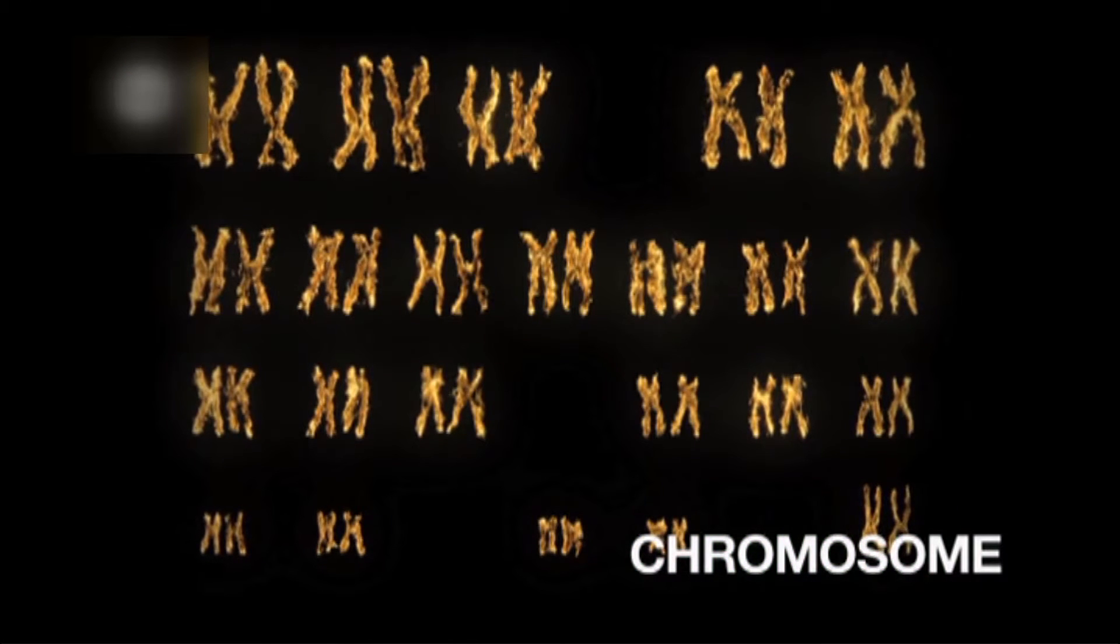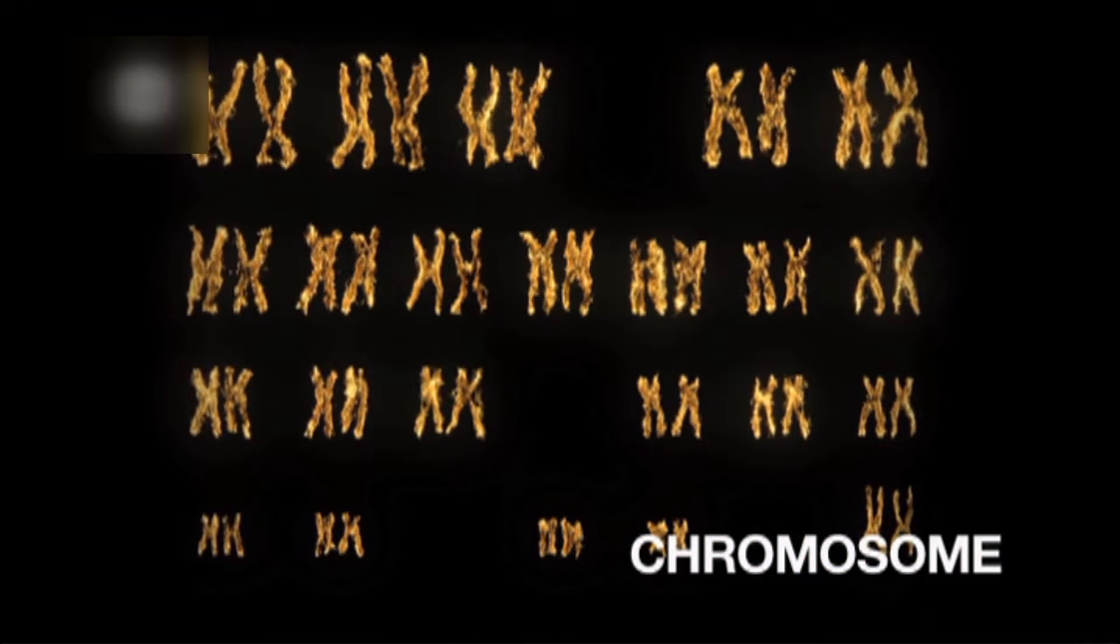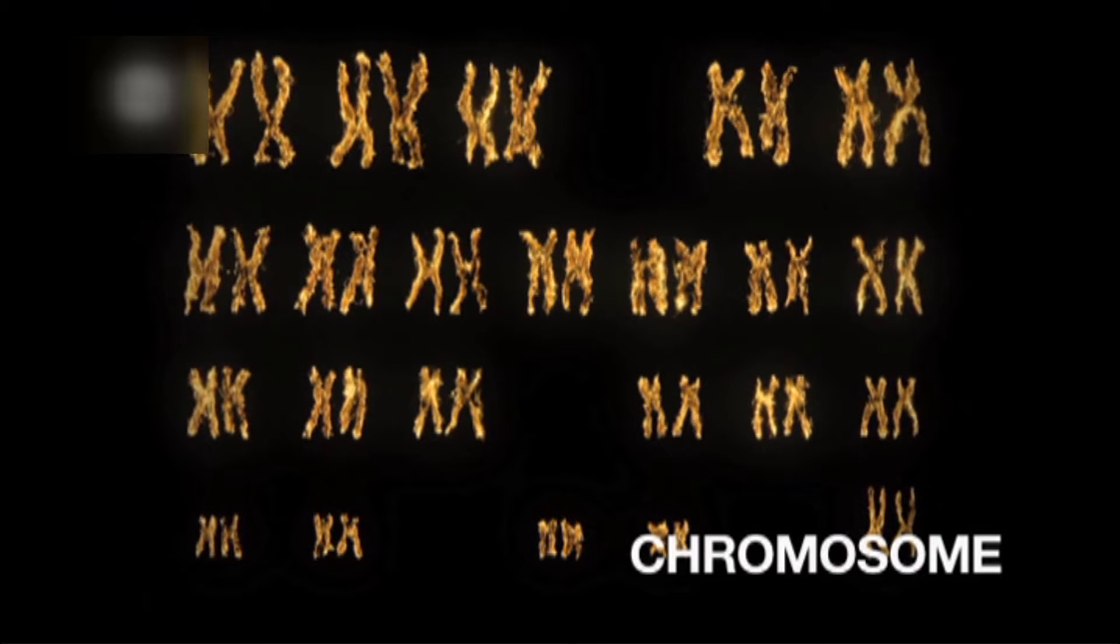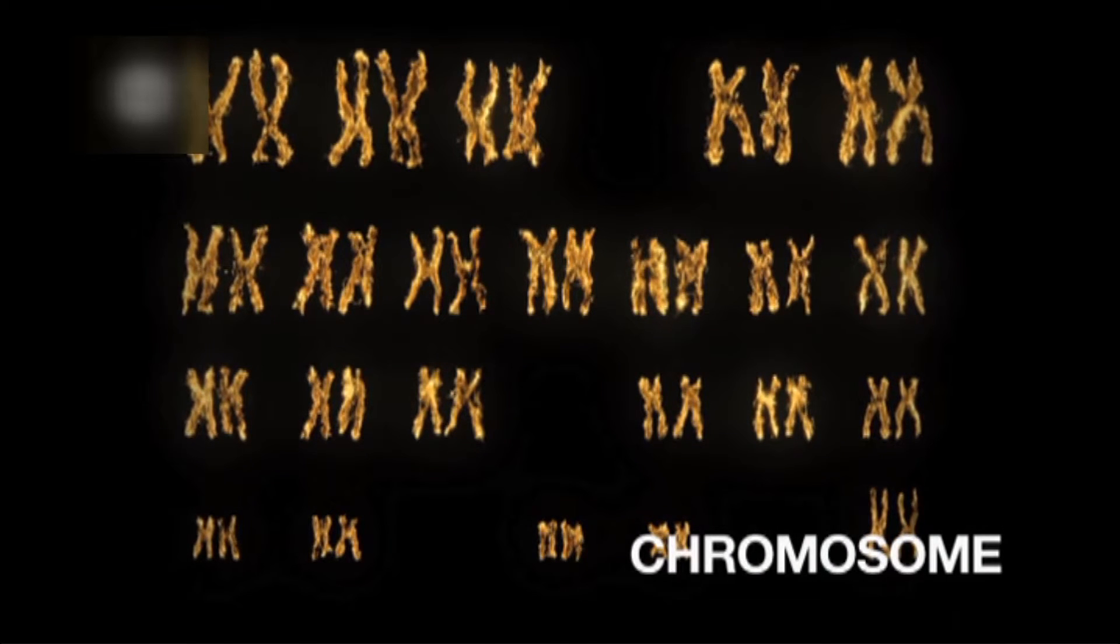The exact form of chromosomes varies among organisms. In humans, each cell normally contains 23 pairs of chromosomes.